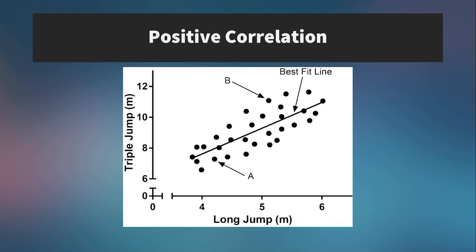Here is an example of a scatter plot showing a positive correlation. People who are good at the triple jump tend to also be good at the long jump because both events require the same biomotor abilities: explosive musculature, good stretch-shortening cycles, a fast approach, and a good power-to-body-weight ratio. Some people may have better technique at one or the other, which is why there's not a perfect correlation, but there is a pretty strong one nevertheless.